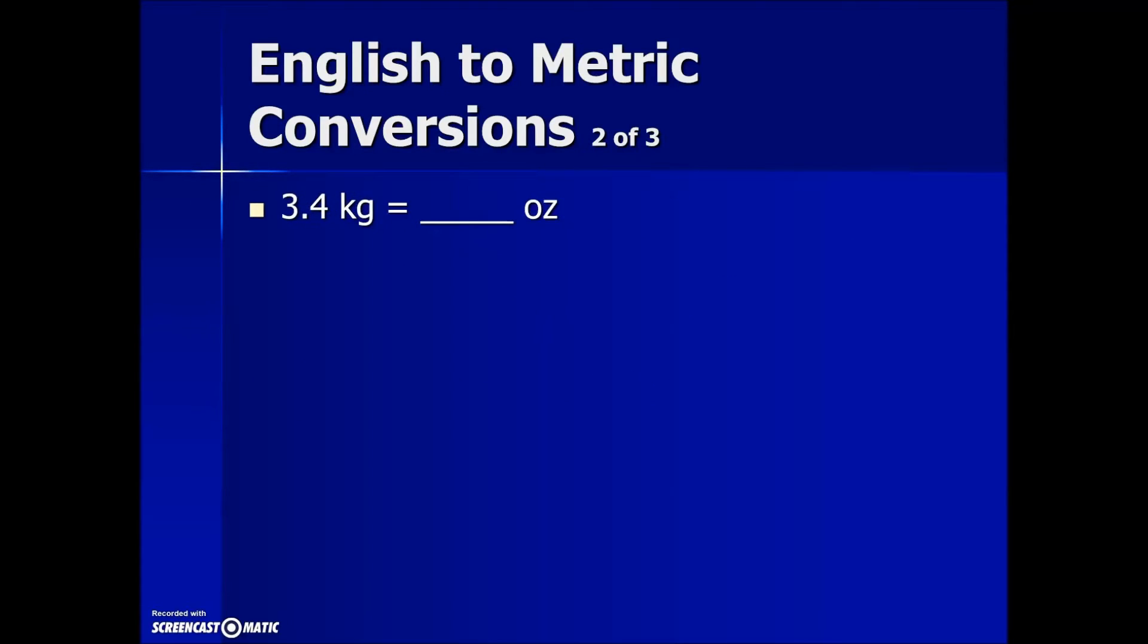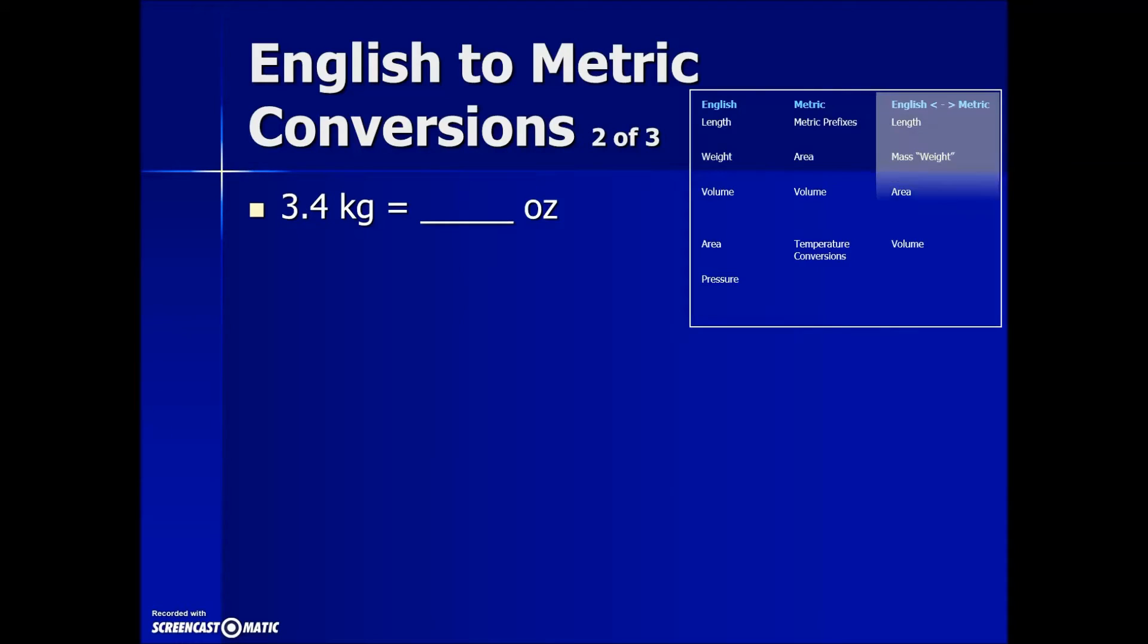The next problem asks us to convert 3.4 kilograms to ounces. Again, we look at our conversion table, the third column. We're looking for kilograms and ounces under the mass and weight category.